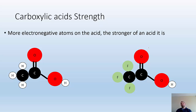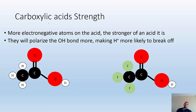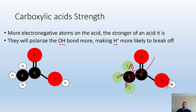Carboxylic acid strength continued: more electronegative atoms on the acid make it a stronger acid because they help polarize the OH bond more, making H+ more likely to break off. With hydrogens, the bonds are pretty much nonpolar. But with fluorines — the most electronegative element — they're pulling electrons from the whole molecule, including from the O-H bond, making it more polarized and easier to break. Looking at the Ka's: acetic acid is 1.8×10⁻⁵, but with three fluorine groups it's significantly stronger at 5.0×10⁻¹ — from 10⁻⁵ to 10⁻¹.